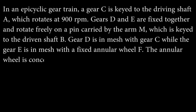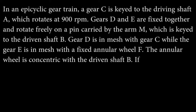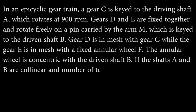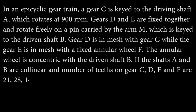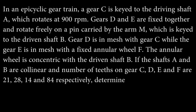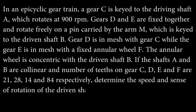The annular wheel is concentric with the driven shaft B. The shafts A and B are collinear. The number of teeth on gear C, D, E, and F are 21, 28, 14, and 84 respectively. Determine the speed and sense of rotation of the driven shaft B.